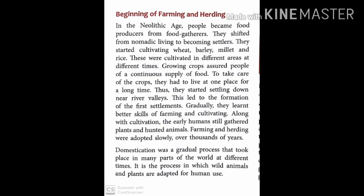Remains of grain and domesticated animals of the Neolithic period have been found at Chirand in Bihar. Other important sites include Tekkalakota and Hallur in Karnataka, and Paiyampalli in Tamil Nadu. These are all sites from about 10,000 years ago from which we learn how early men of the Neolithic period learned farming and agriculture.